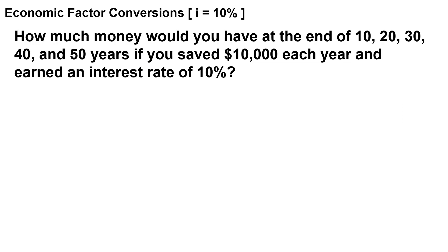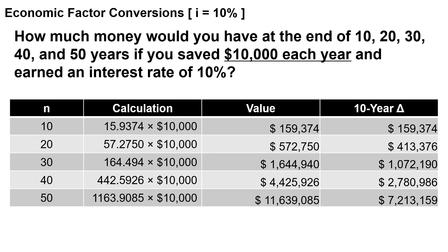To illustrate this more clearly, let's look at the 10-year delta — how much you earn in each 10-year period relative to the previous one, while still contributing $10,000 per year. The first period yields about $159,000. The next increment is bigger — $400,000, then over $1 million, then almost $3 million, then over $7 million. That's why you want to save as early as possible, as much as possible. Give yourself that time to build compound interest, get that value, save this money, and build wealth long term.